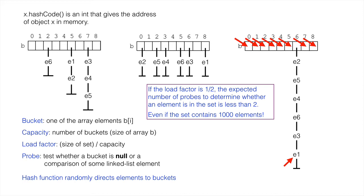But as the load factor increases past 1 half, the average number of probes needed to determine if an element is in the set increases. At some point, it is best to create a new array, hash all the elements into the new array, and use the new array. The default for the number of probes for Java's class hash set is when the load factor reaches 3 quarters, 0.75.